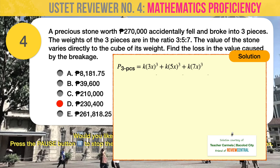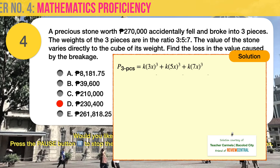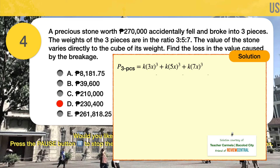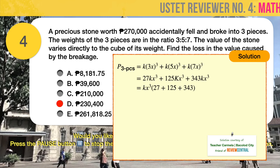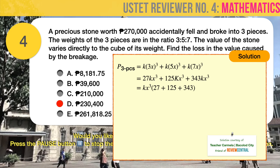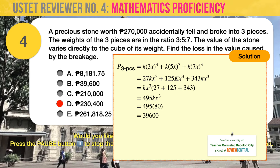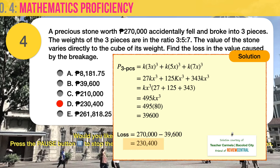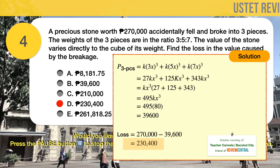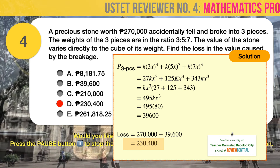For the broken pieces, their total value equals k(3x)³ plus k(5x)³ plus k(7x)³. Expanding the cubes and factoring out kx cubed, we substitute the value of kx cubed from equation 2 and arrive at 39,600 as the total value of the broken pieces. We compute the loss in value by subtracting 39,600 from 270,000. The loss in value is equal to 230,400 pesos.